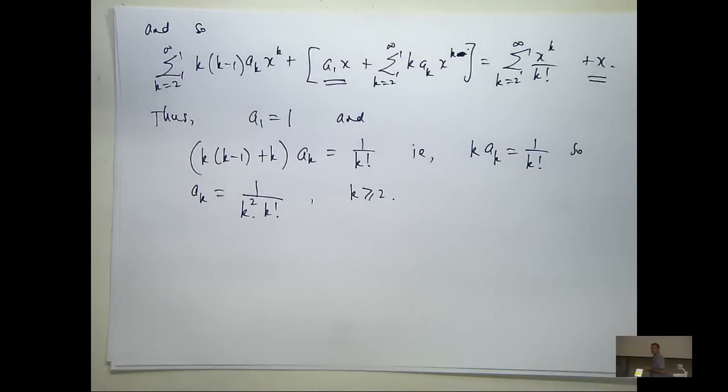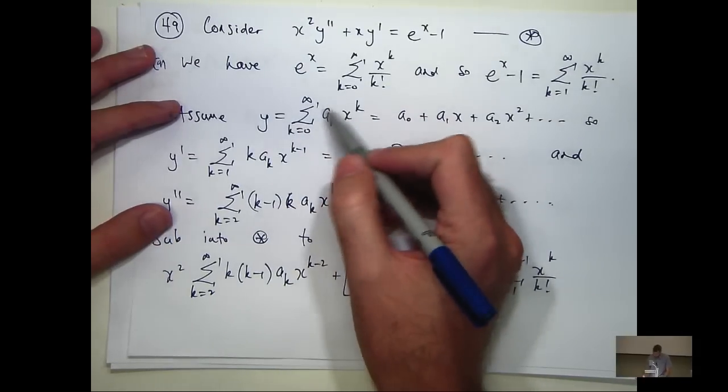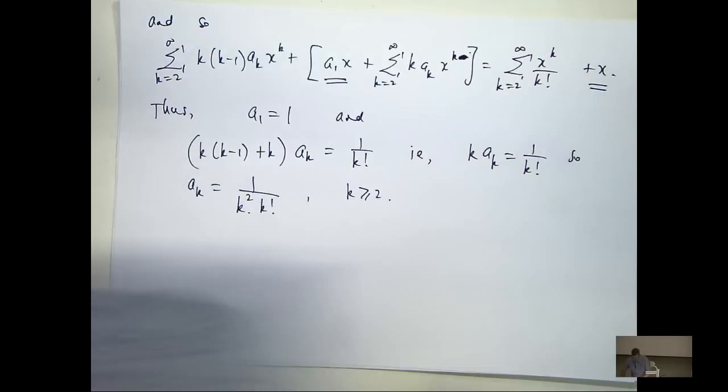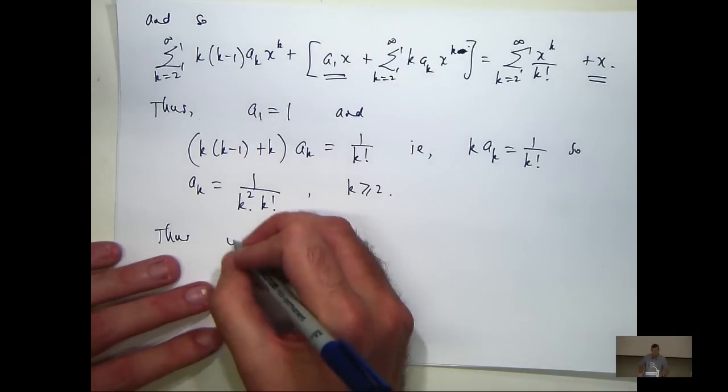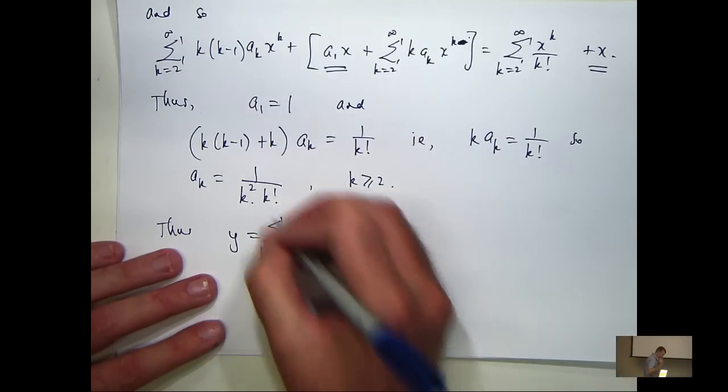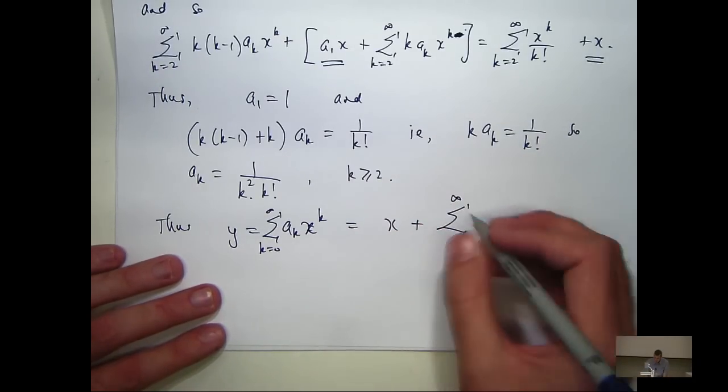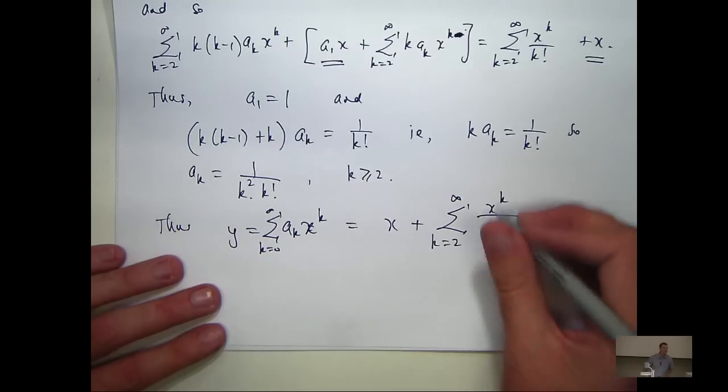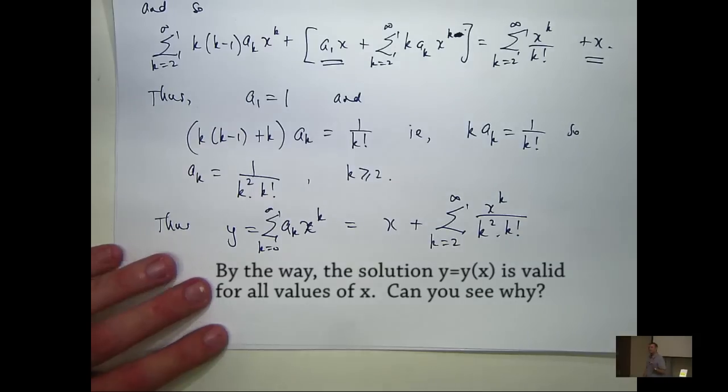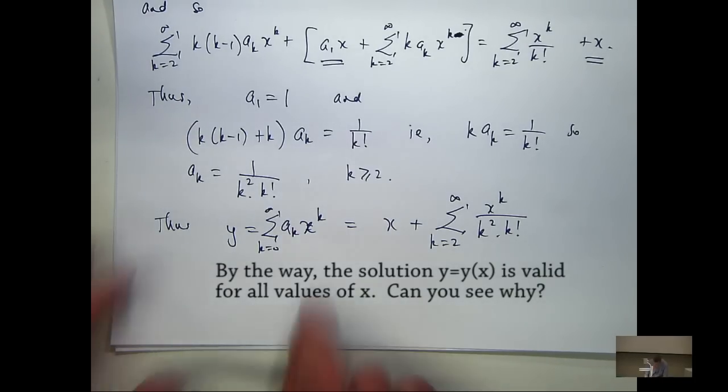So what does it mean? I've found my A sub k. So I can go back now and write a definite A sub k in there, and I've got my solution. Okay, so it looks a bit messy, but that is your solution based on the assumption that your solution was in this form to start with.